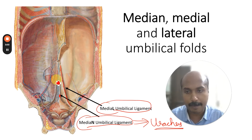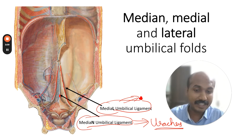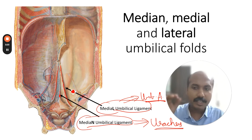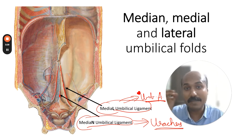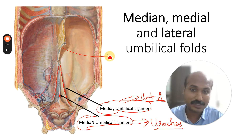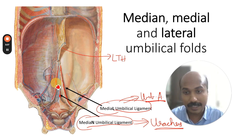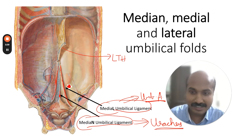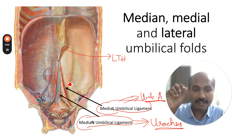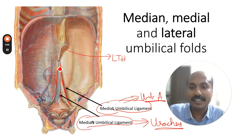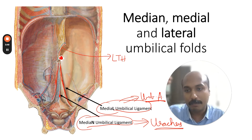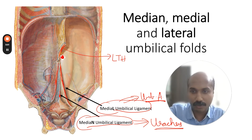Lateral to that, you have a pair of medial umbilical ligaments, which are remnants of the obliterated umbilical arteries. To compare: the umbilical vein remnant is the ligamentum teres hepatis, covered in a previous video. There are two umbilical arteries going toward the umbilicus and one umbilical vein bringing blood away from it.